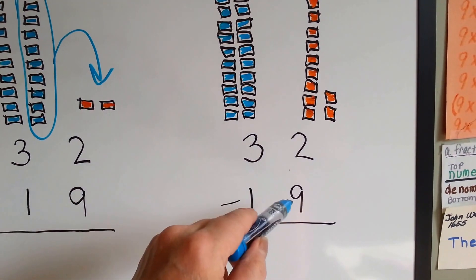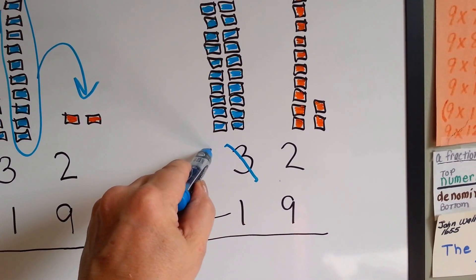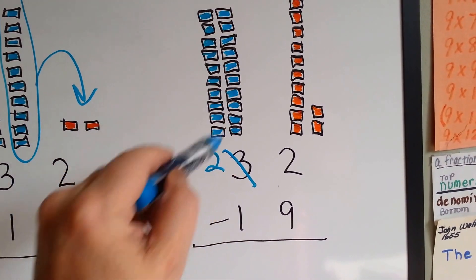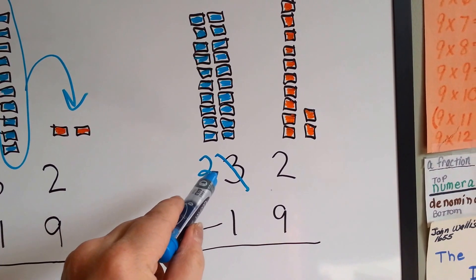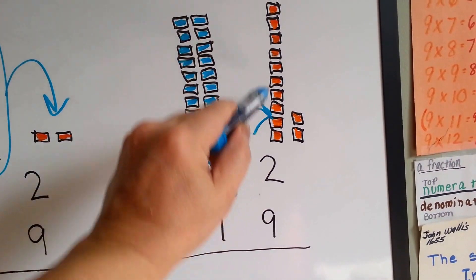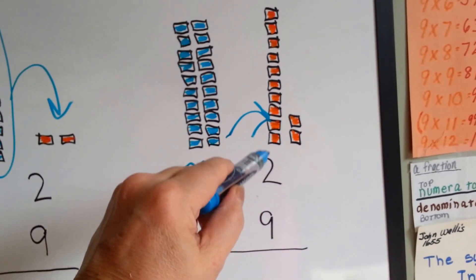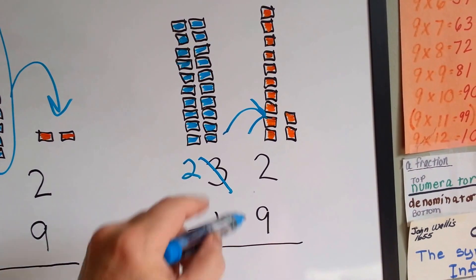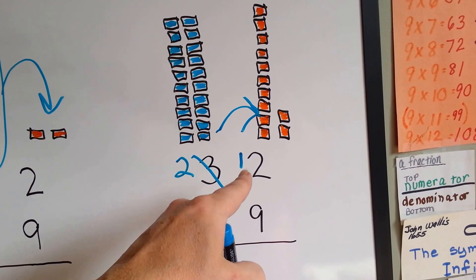You can't have 2 and take 9 away, so we borrow from the tens, and it becomes a 2. See? 1, 2. The one we're borrowing comes over to here. See? And now we've got 12 on the 1 side. See? 12.